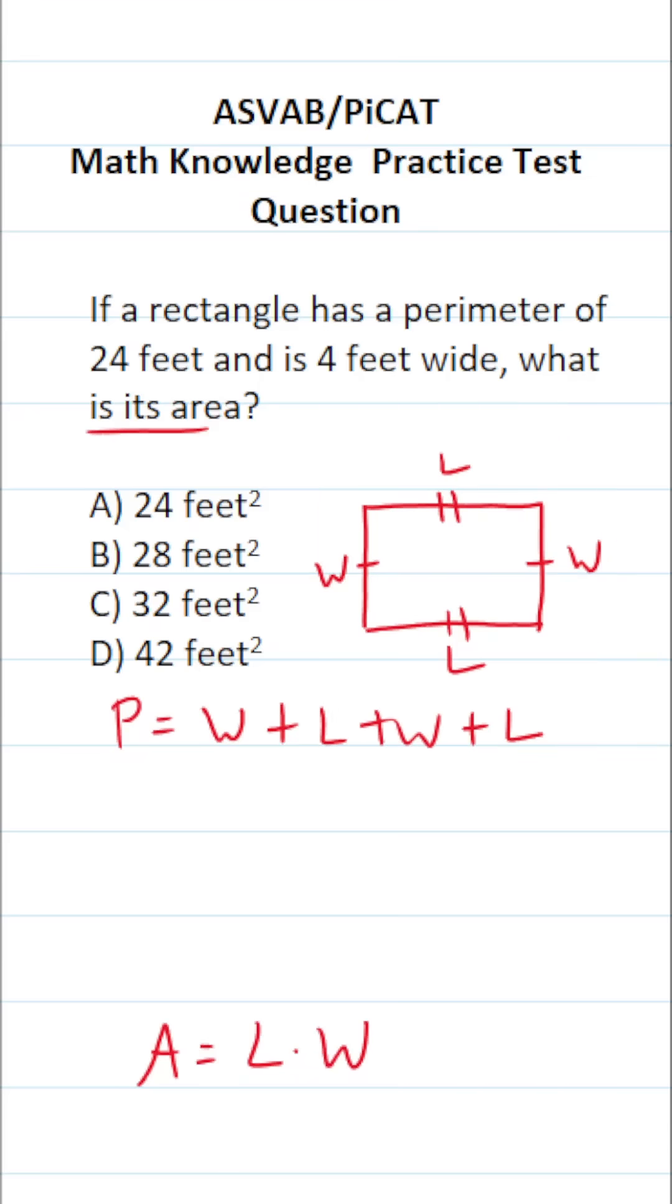All right, so now that we've determined the formula to find the perimeter of this rectangle, let's add this piece of information to the puzzle. We know the width of this rectangle is 4 feet. It tells us that right there.